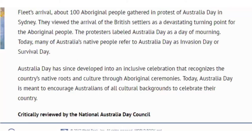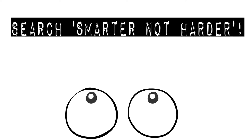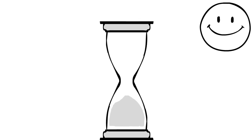Once we have an understanding of our topic and a list of keywords we're ready to start searching a database. But before we do, let's take a quick look at some special tricks we can use to make our searches really powerful. What we want to get is relevant results as quickly as possible. We do not want to sift through thousands of results and spend hours trying to find articles that are actually useful to us.